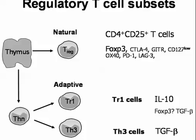They express CD3, CD4, and CD25 cell surface markers. Remember that CD25 is the alpha chain of the interleukin-2 receptor.